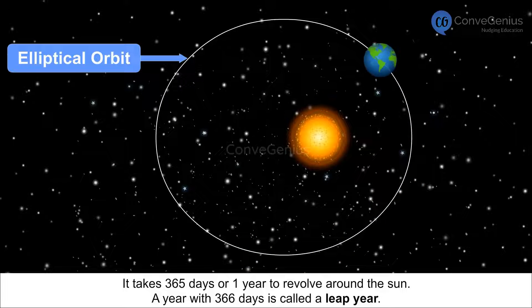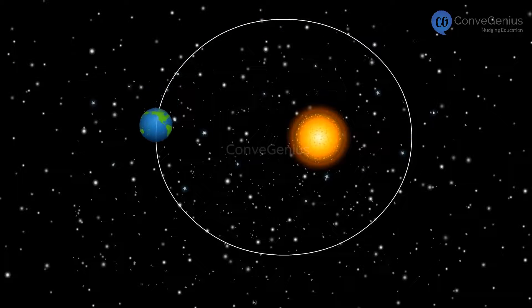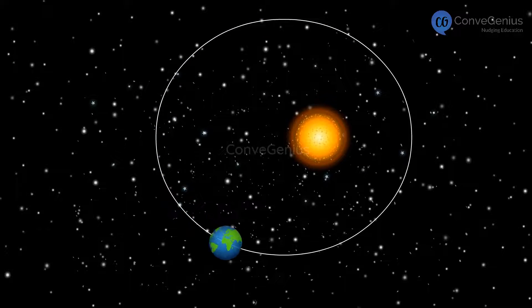A year with 366 days is called a leap year. One day is added to the month of February. Every 4th year, February is of 29 days instead of 28 days.